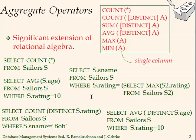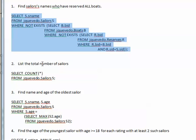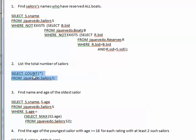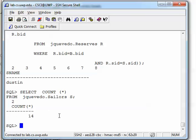Something we do not have in relational algebra that makes SQL even more powerful is aggregate operators. We have aggregate operators to COUNT, SUM, AVERAGE, MAX, and MIN. These are very helpful. For example, SELECT COUNT — this is how many sailors we have. My second exercise is: list the total number of sailors. It says we have 14.